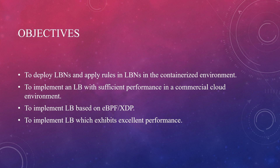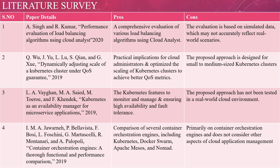Coming to literature survey: we reviewed eight papers. The first is titled Performance Evaluation of Load Balancing Algorithm Using Cloud Analyst. Its disadvantage is that it does not accurately reflect real-world scenarios. The second paper is titled Dynamically Adjusting Scale of Kubernetes Clusters Under Quality of Service, proposed by Qvue, Jvue, Lelue, Esquain, and GQ. It has practical implementations for cloud administration and optimizes the scaling of Kubernetes.